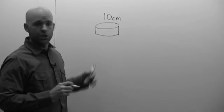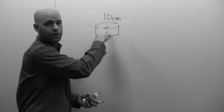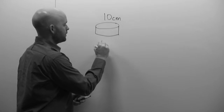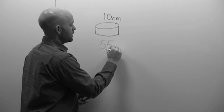Alright, now a 10 centimeter dish has a surface area that cells can grow on equal to 55 centimeters squared.